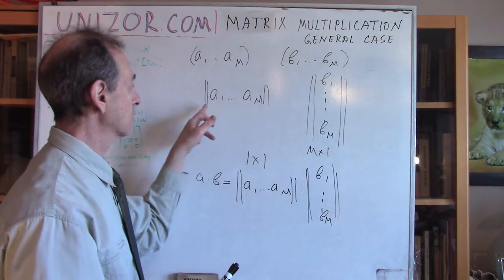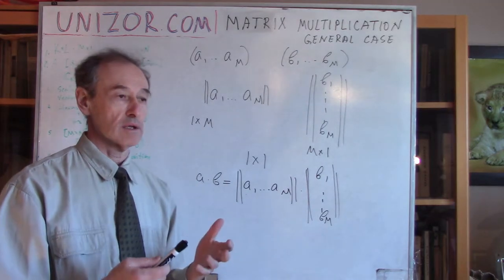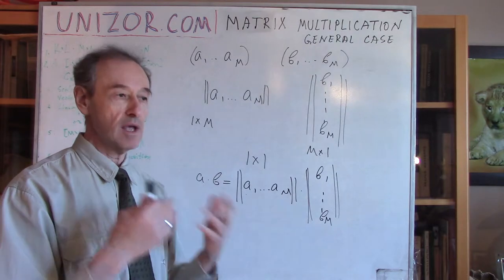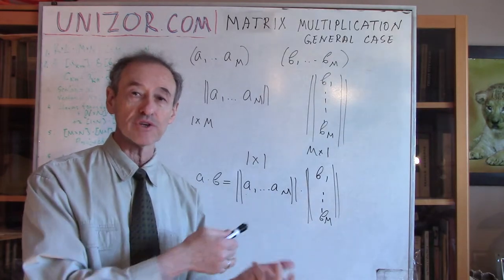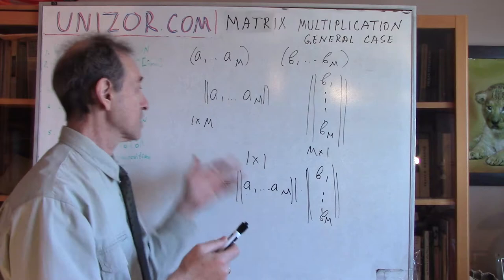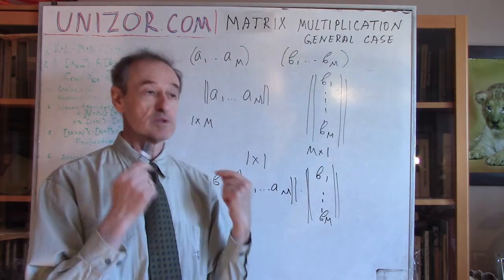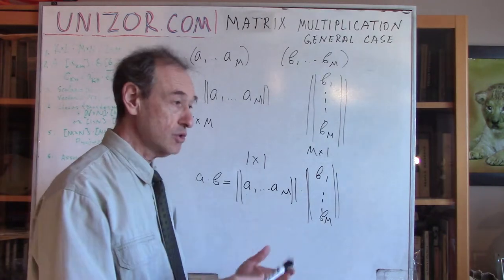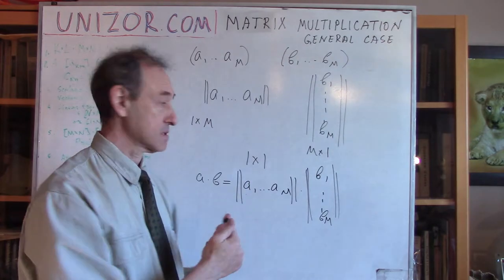So scalar product can also be viewed as a matrix product of two matrices: one of dimension 1×M and the other M×1. Not only multiplication of matrices which are full tables with rows and columns, but also things can be viewed from the matrix perspective. A vector is also a matrix — it just has one row or one column — and even a scalar can be considered a 1×1 matrix. Matrices are a more general instrument in mathematics.